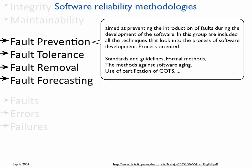Fault prevention methodologies are usually process-oriented. For example, they can be standards or guidelines that tell us how to implement code. A very famous standard is MISRA-C and MISRA-C++, commonly used in the automotive industry — it tells us where to use pointers, which types of variables to use, how to name variables, how to organize functions, and so on. We can also use formal methods; if we can describe our software using a state machine, we can verify the system and catch faults during the development period.